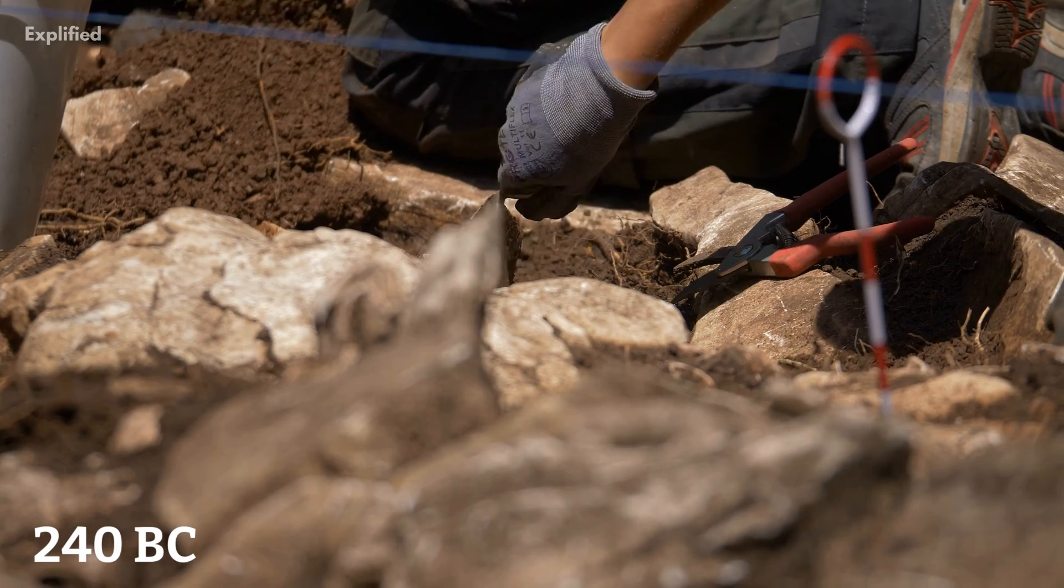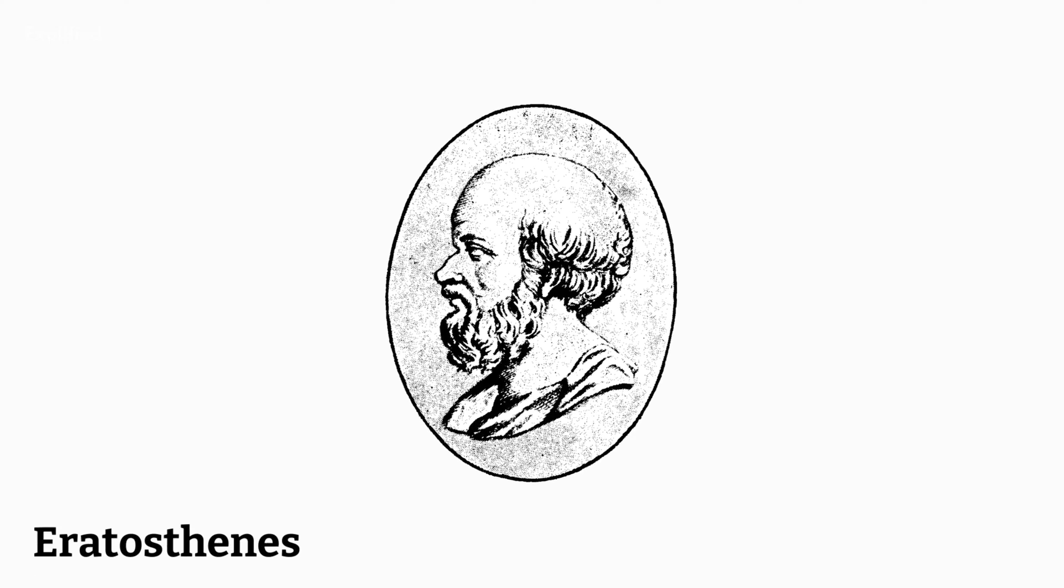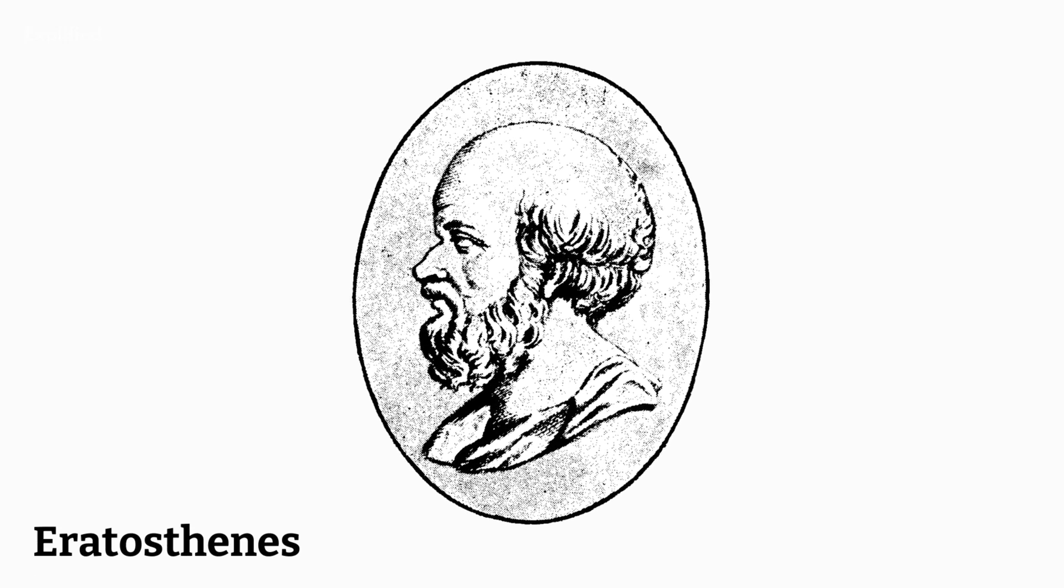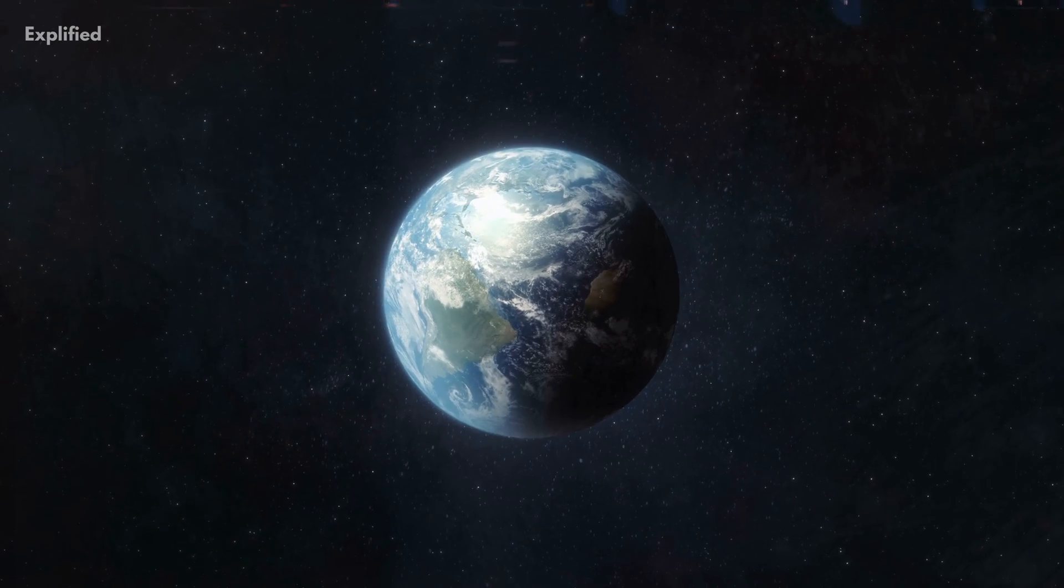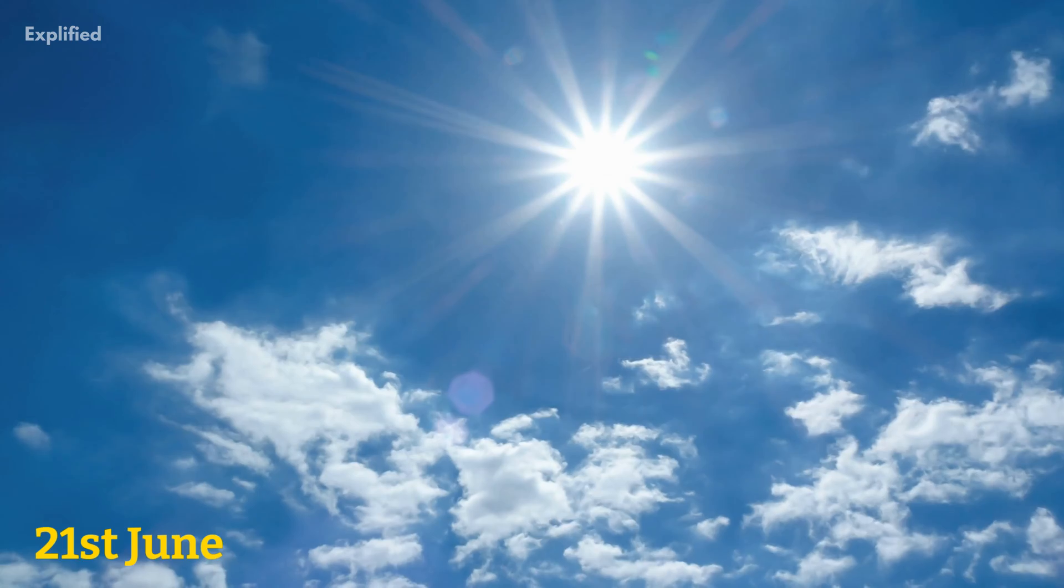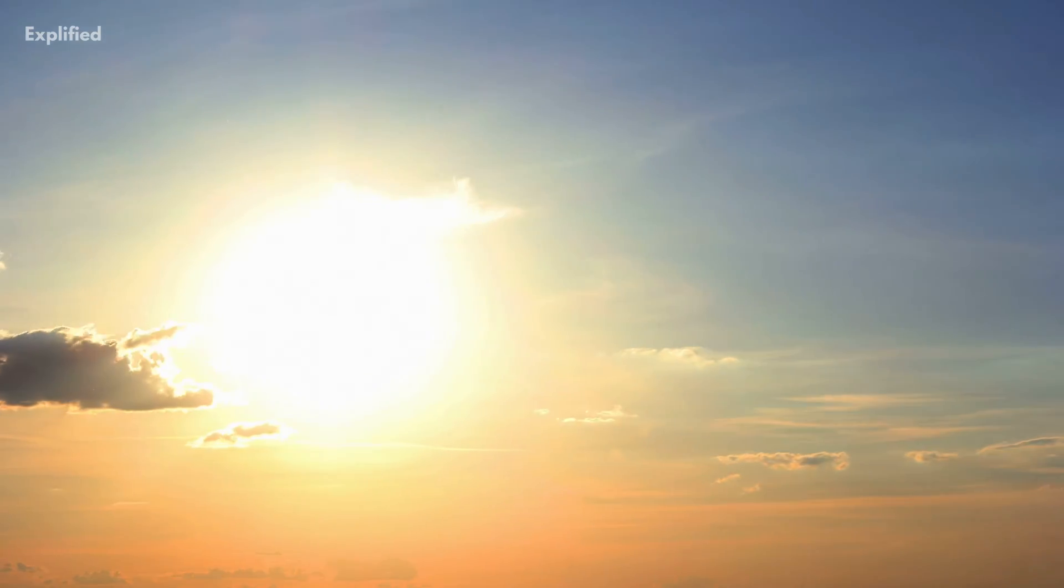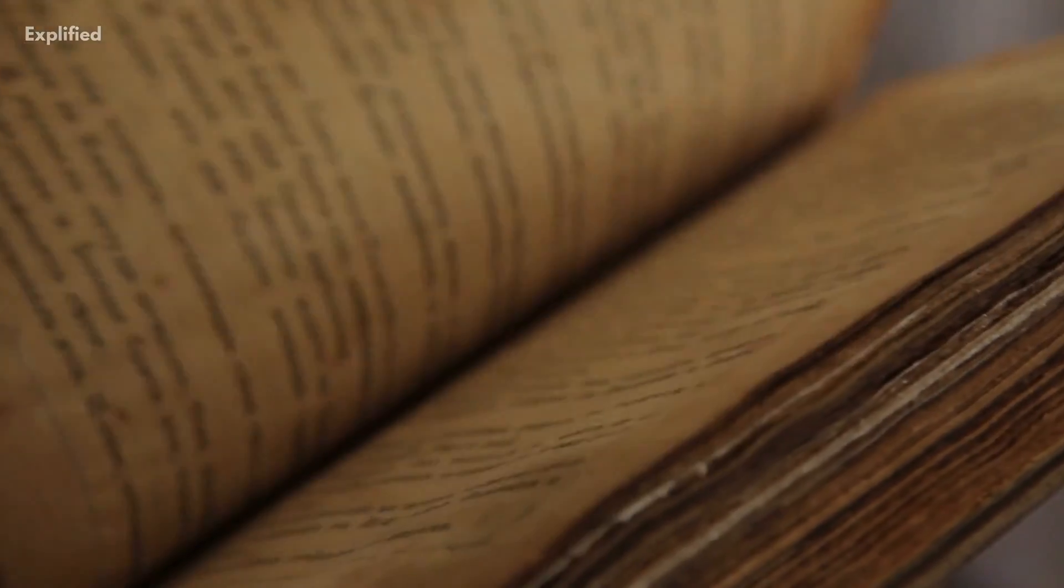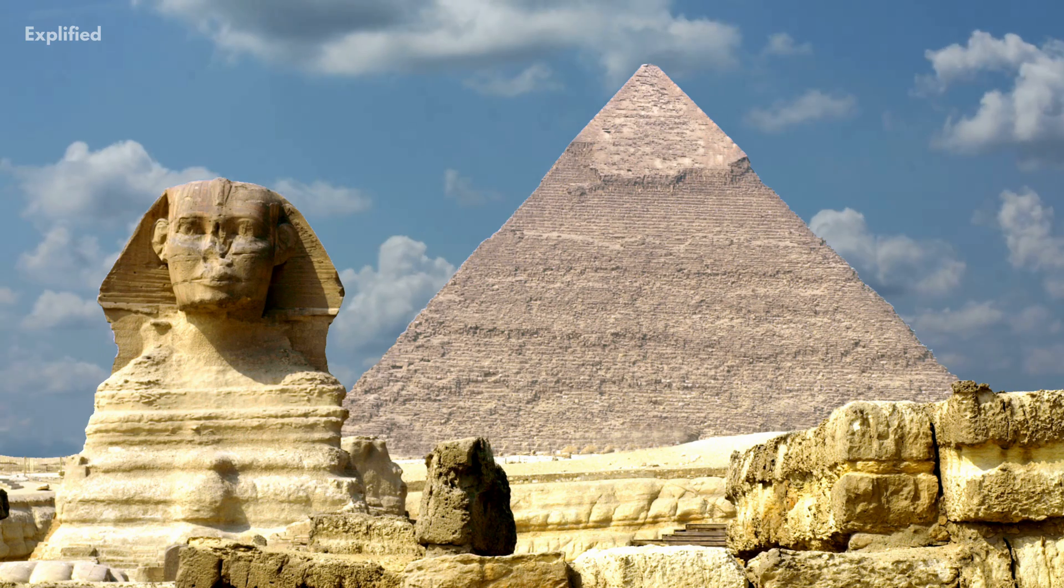Then, in about 240 BC, Eratosthenes developed a method for determining an approximation of the earth's circumference. At noon on the summer solstice, 21st June, the sun would be directly above, shining straight down the well without casting a shadow, according to a story he had read about a well in Cyene, now Aswan, Egypt.